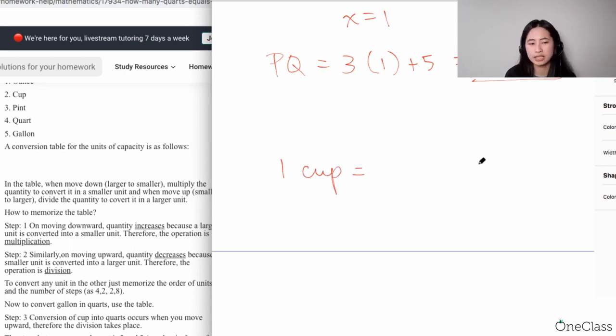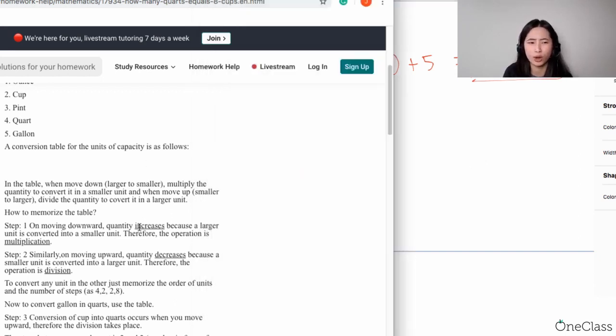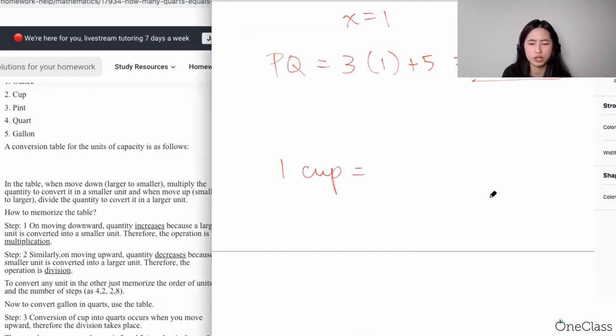So this is something that they should give you. I don't expect your teacher would actually ask you to memorize all of the conversions - they should give this to you. So if you have one cup, right, this is going to be one over four, and this is quarts, right? So it's a quarter.